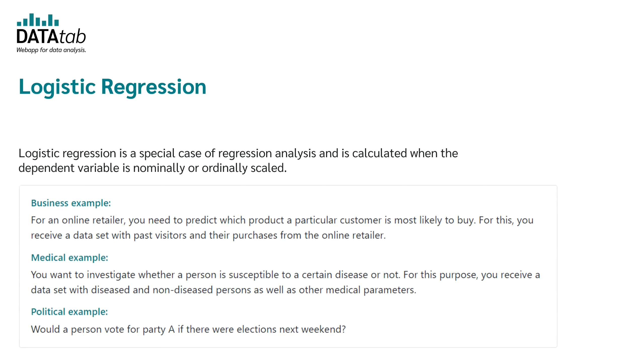Let's look at some examples. First we have a business example. For an online retailer you need to predict which product a particular customer is most likely to buy. For this you receive a data set with past visitors and their purchases from the online retailer. A second example is a medical one. You want to investigate whether a person is at risk of a certain disease or not. For this purpose you receive a data set with diseased and non-diseased people as well as other medical parameters.